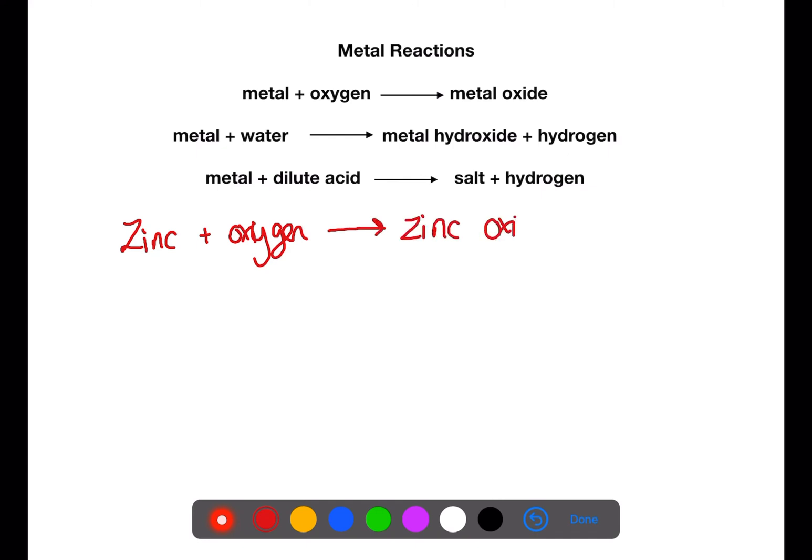When metals react with water they will form a metal hydroxide and hydrogen will also be released. For example, if lithium reacts with water you will produce lithium hydroxide and hydrogen.